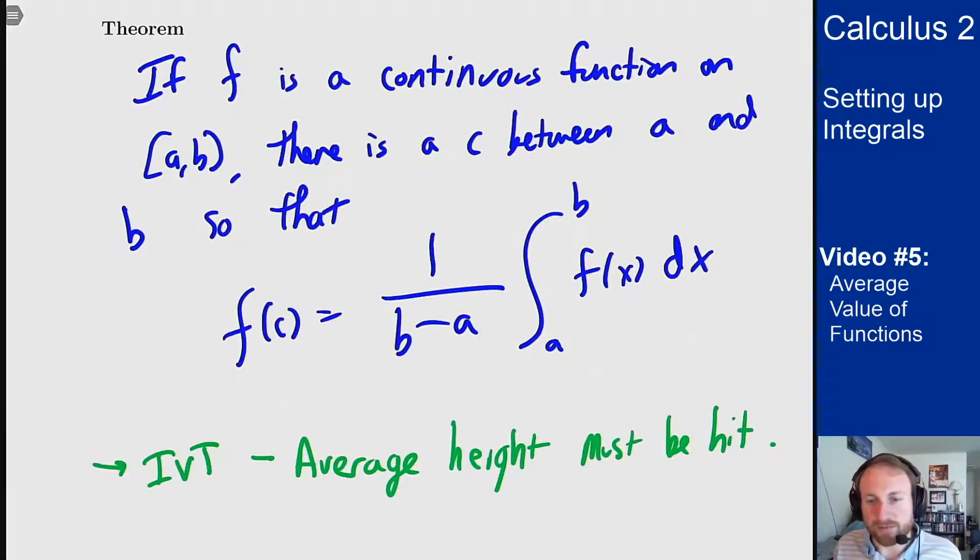Another way to think about this is via the mean value theorem from derivatives that we had way back in calc 1. And the idea there is if I apply the mean value theorem to the anti-derivative of little f, I get exactly this statement here. And why is that?